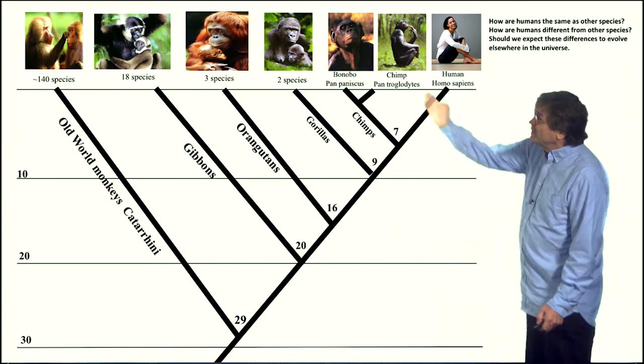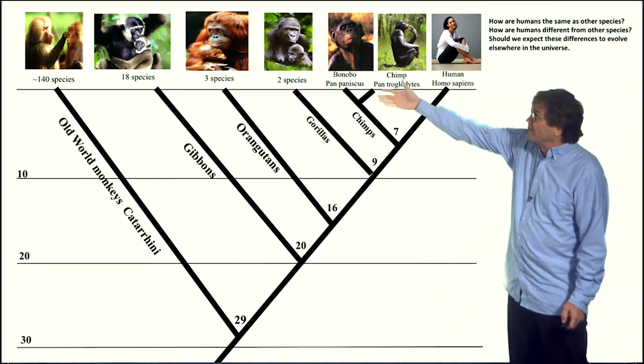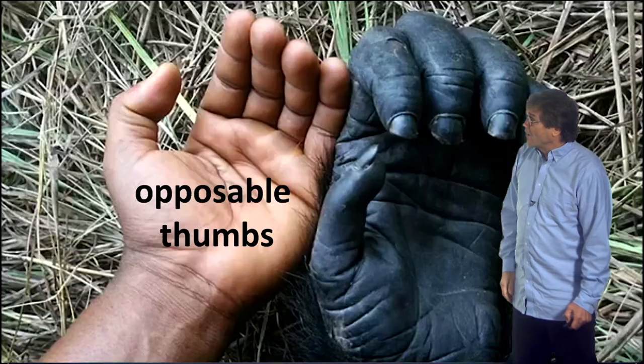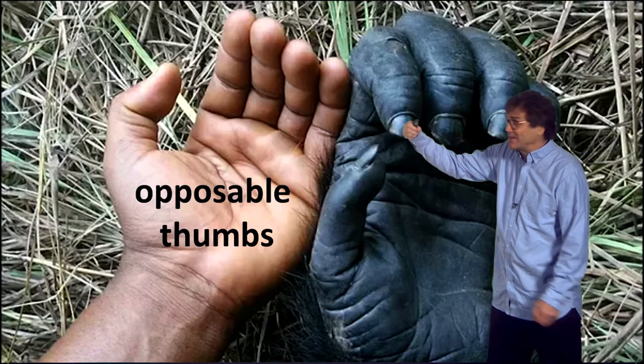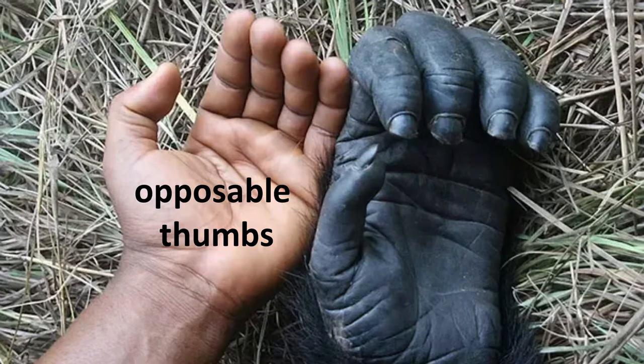Now one thing in common that all of our cousins here have are opposable thumbs. I have an opposable thumb, it helps me hold a slide advancer, and here's a human and probably a chimpanzee or a gorilla showing us the opposable thumb.